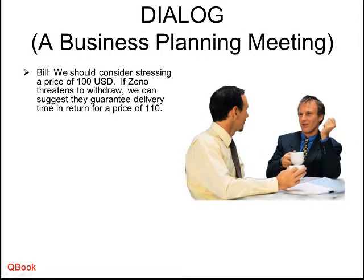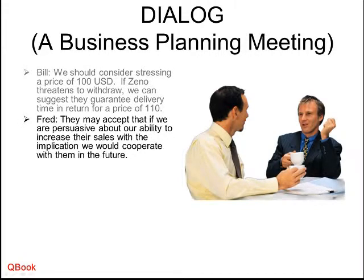Bill suggests they consider stressing a price of 100 USD. If Zeno threatens to withdraw, they can suggest guaranteeing delivery in time in return for a price of 110. Remember the goal was 120 — they start at 100, willing to go up to 110, using the delivery guarantee as leverage. Fred says they may accept that if their team is persuasive about their ability to increase Zeno's sales, implying future cooperation.